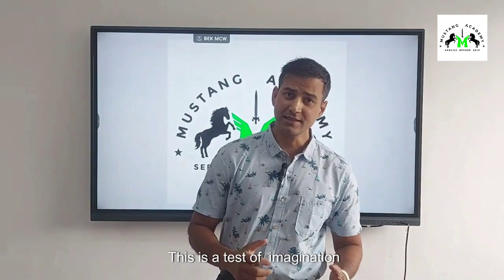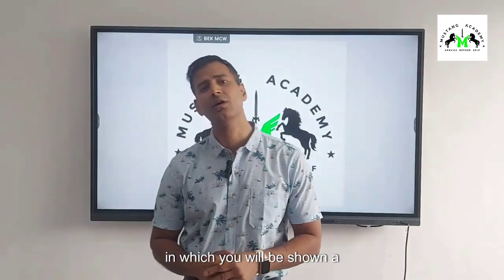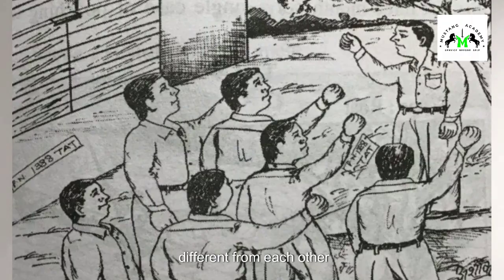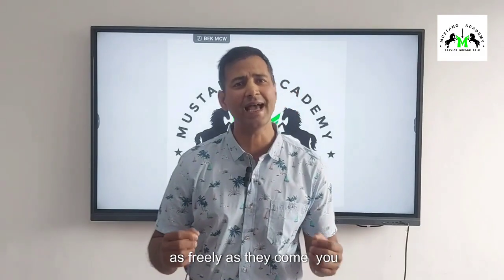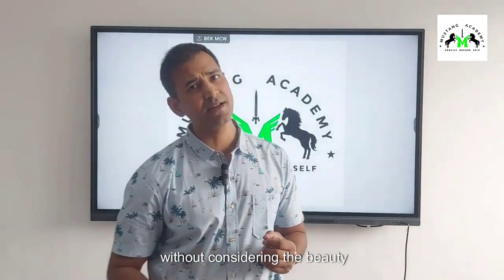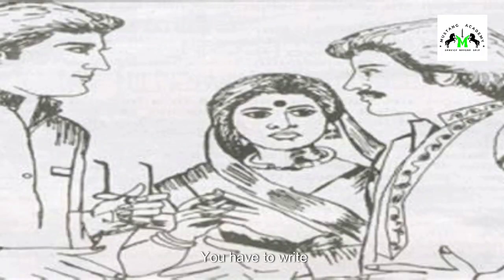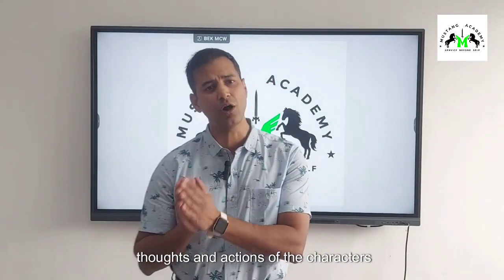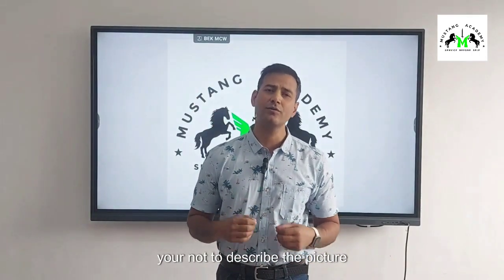This is a test of your imagination in which you will be shown a number of pictures one after another, and you are free to give responses which are going to be different from each other. After seeing the picture you have to write a story around the characters and situation. Put down your thoughts as freely as they come to you, without considering the beauty of expression. In the story you have to write what has led to the situation, what is going on, and what will be the likely outcome. You have to describe the feelings, thoughts, and actions of the characters shown in the picture.